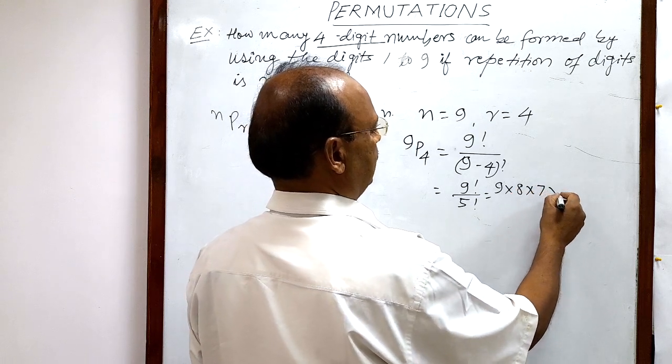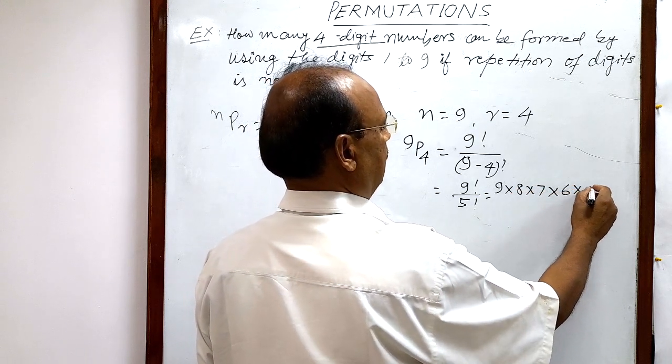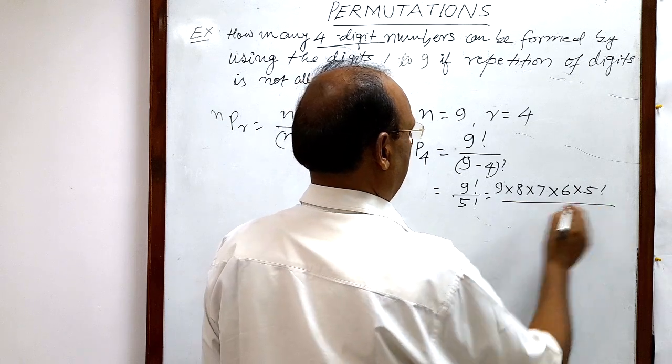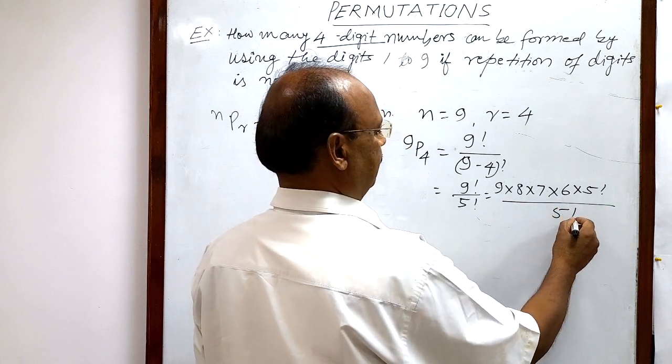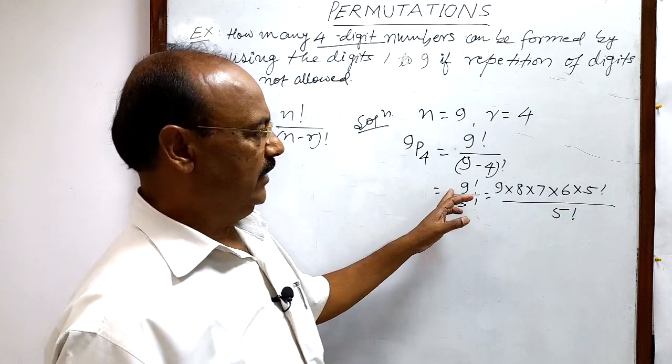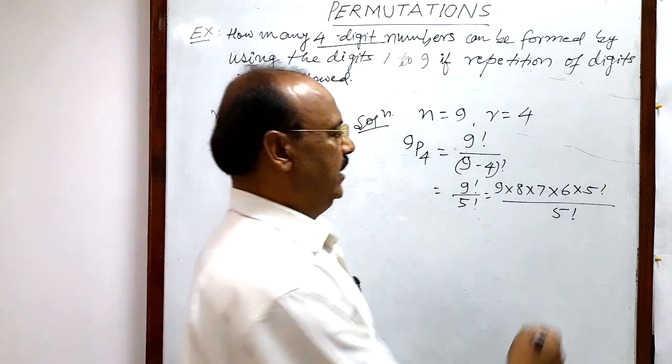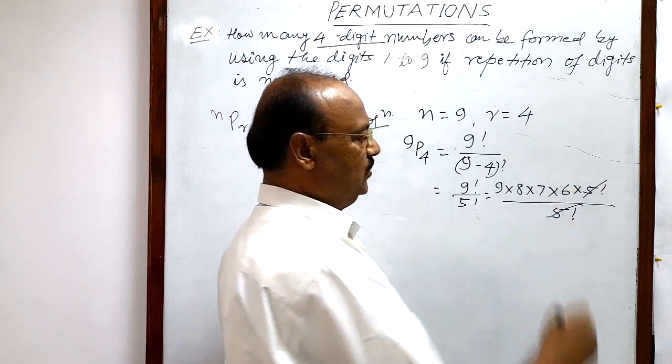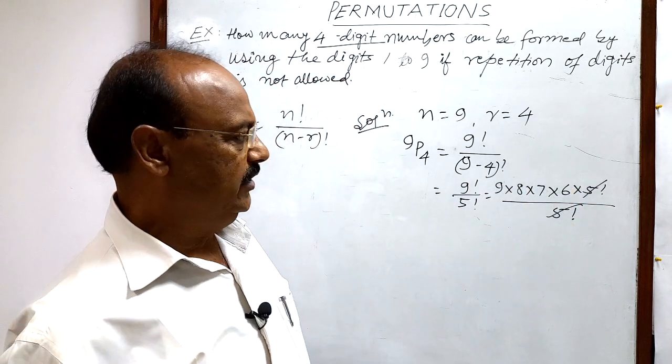We are writing 9 factorial in this way so that 5 factorial will be cancelled out from numerator and denominator.